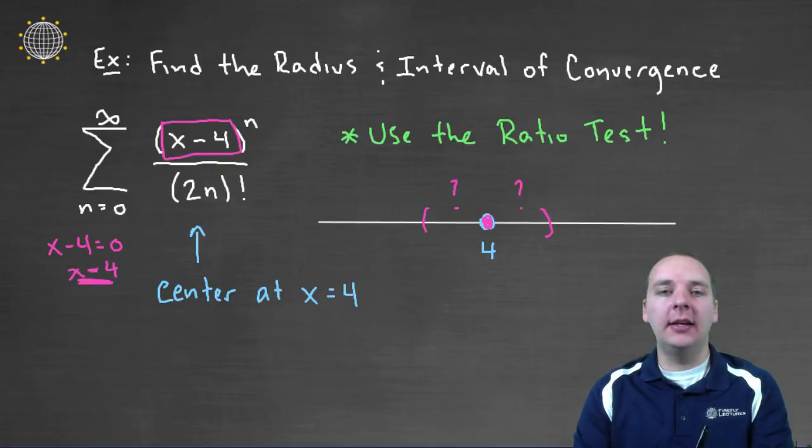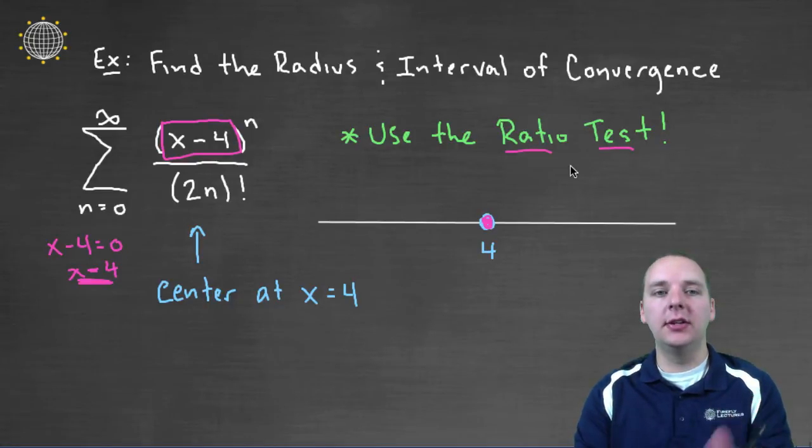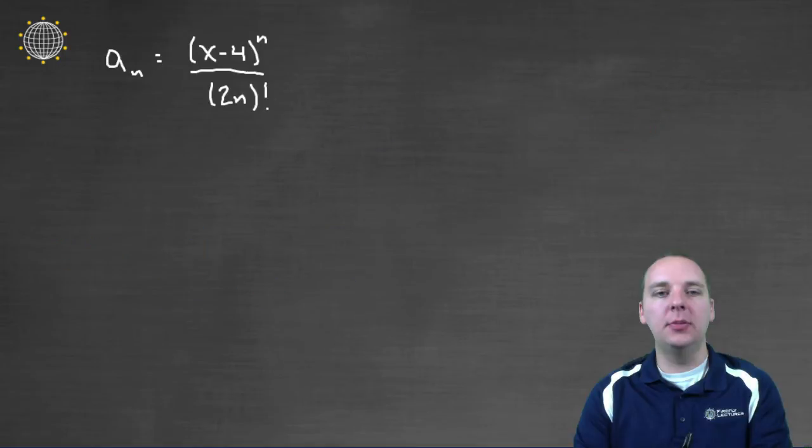Now, how do we actually find the interval of convergence? Well, what we typically use, more often than not, is the ratio test. The ratio test is a very good test to determine the convergence of power series. So let's do that. So here's the terms that we're adding up. This is going to be considered our a sub n.